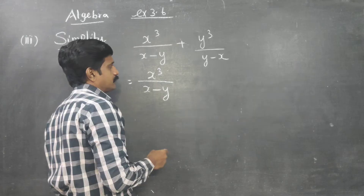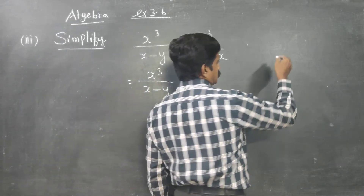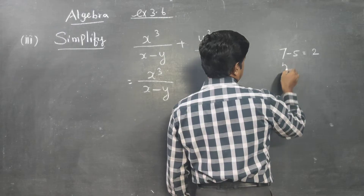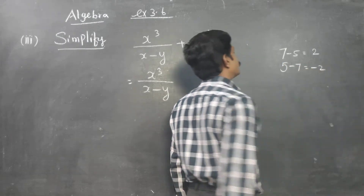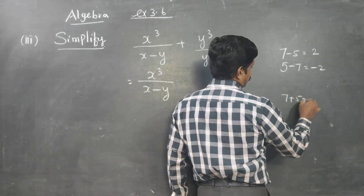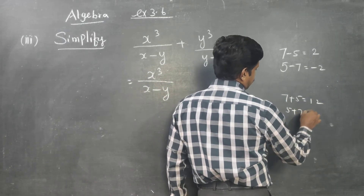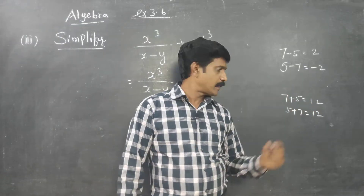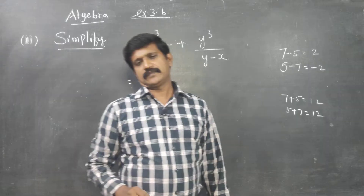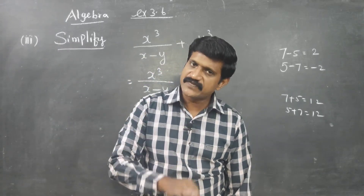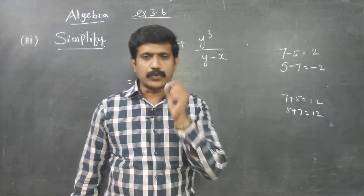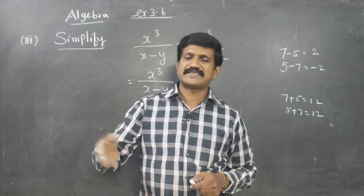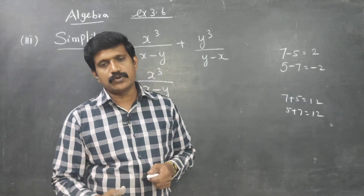Now, before proceeding, a small reminder: 7 minus 5 is 2, but 5 minus 7 is minus 2. However, 7 plus 5 is 12, and 5 plus 7 is also 12. Addition is always commutative: a plus b is equal to b plus a.